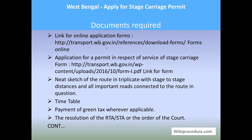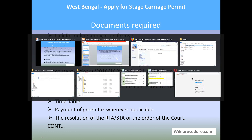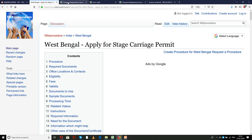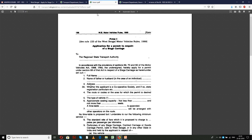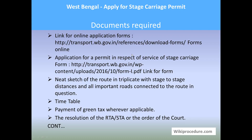Let us see the documents required. The link for online application forms for West Bengal-related permits is available here, and the specific form needed for this permit is available via a direct link. I will show you both the links and their respective pages. This is the forms link where you can download the form for your respective procedure, and this is the direct link for the form required for the stage carriage permit. Download this form, print it, and fill it in for applying.